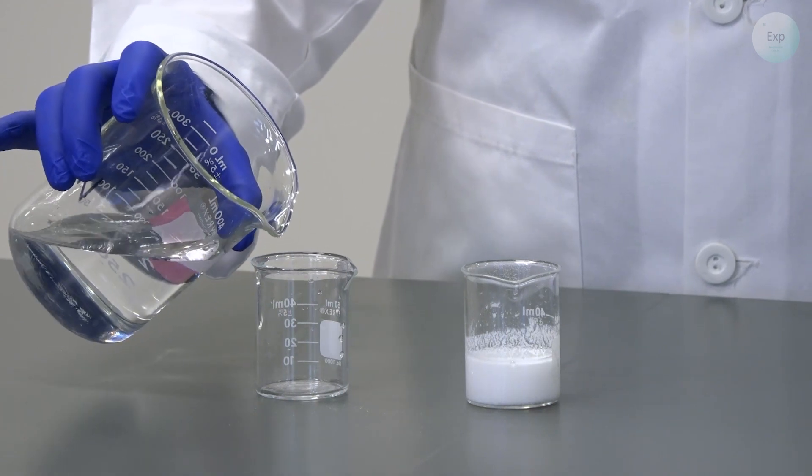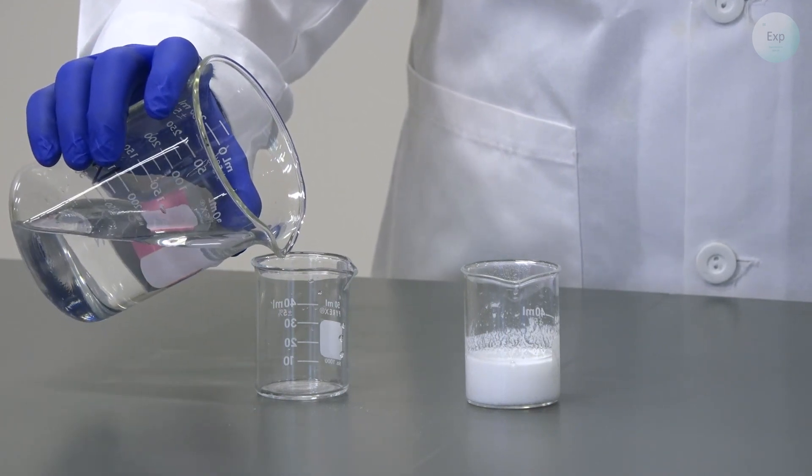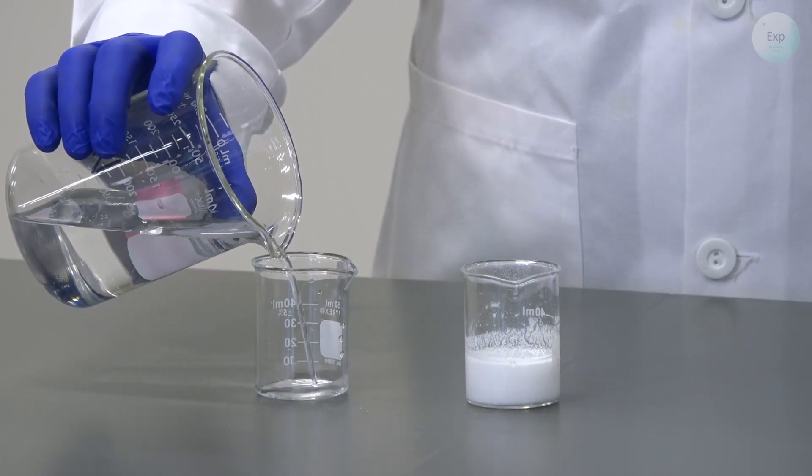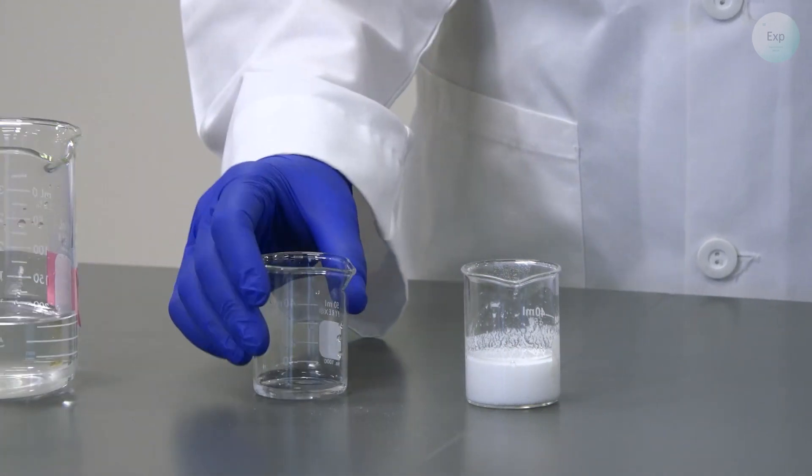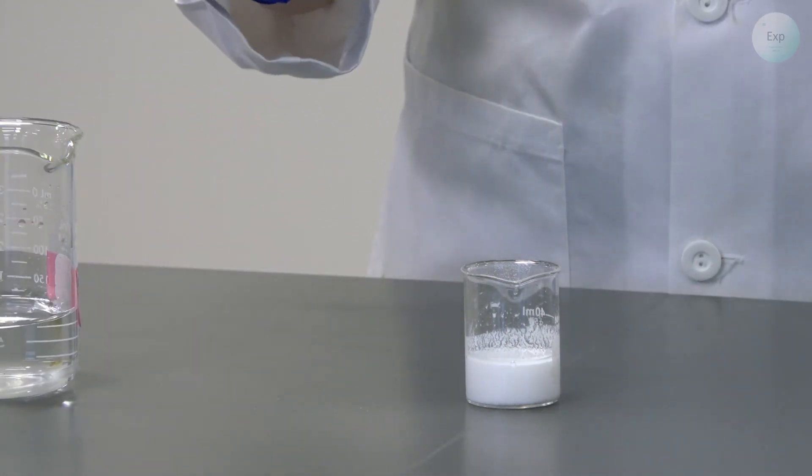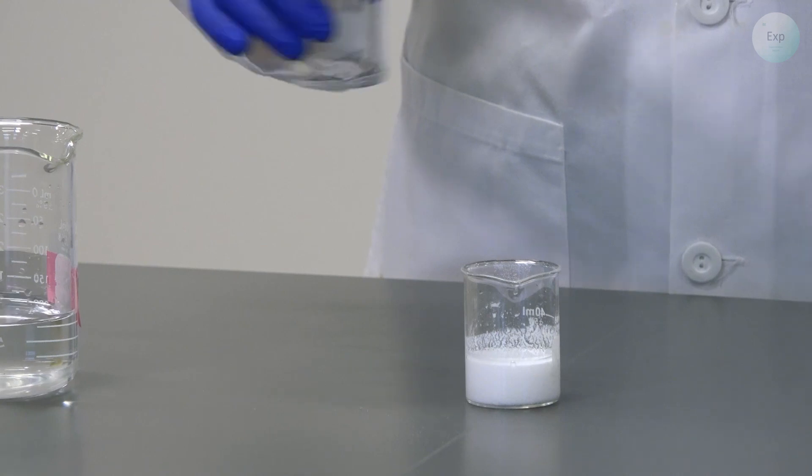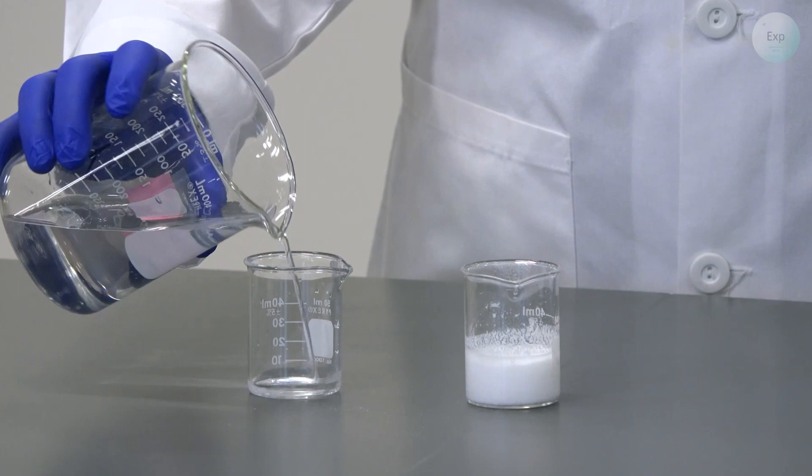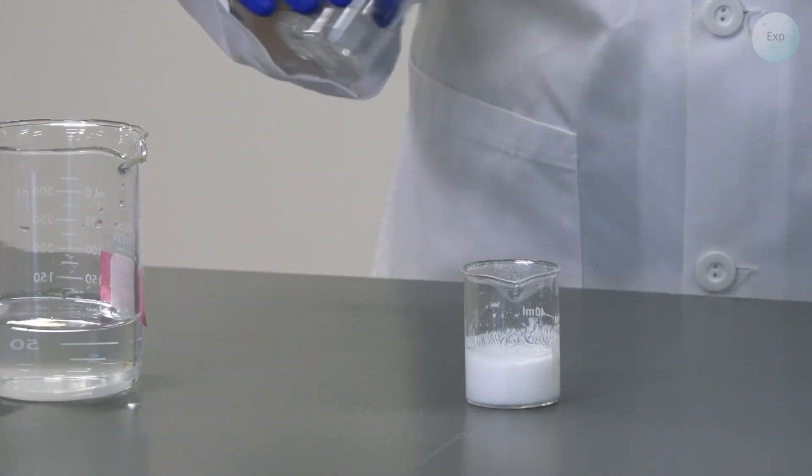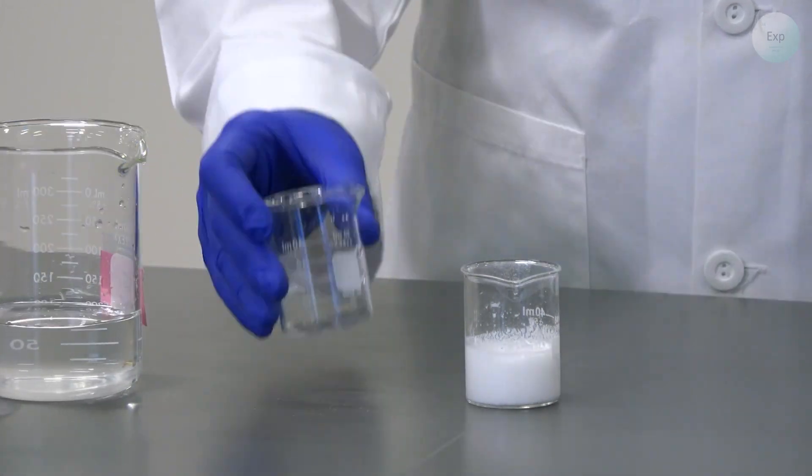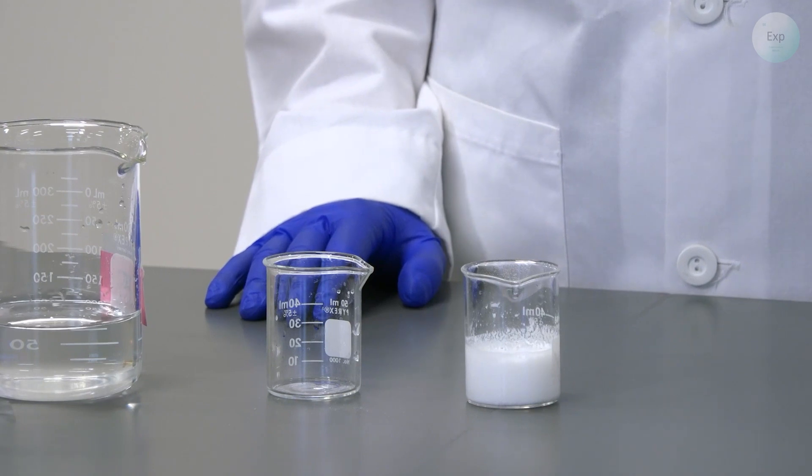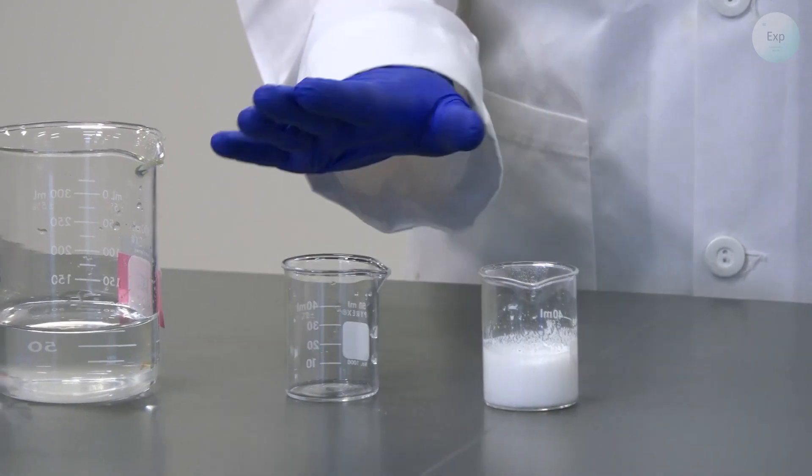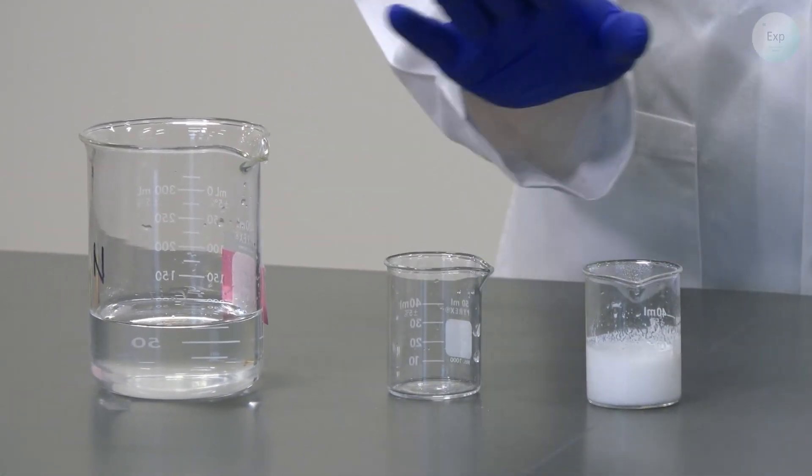it is best to, at least once or twice, rinse our beaker with very small amounts, no more than 2 or 3 milliliters of deionized water, and transfer it into the other beaker. This is where we can consider our precipitation reaction complete and all our calcium chloride solution transferred.